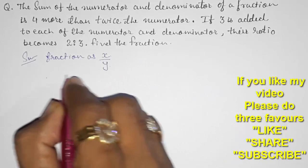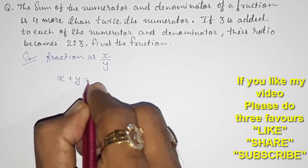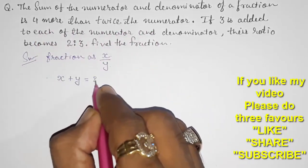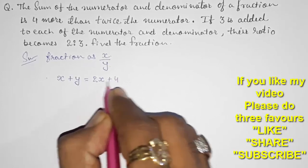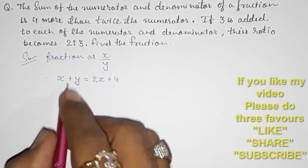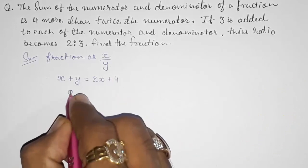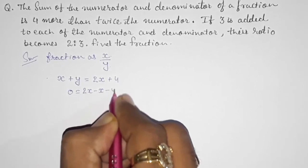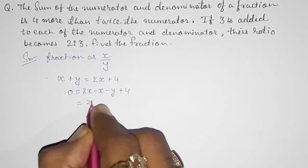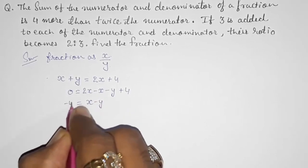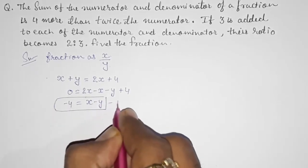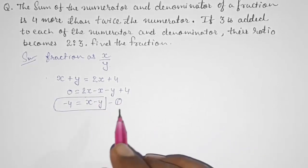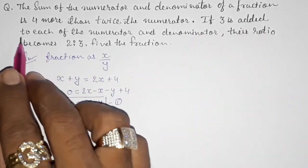Sum of numerator and denominator: x + y = 2x + 4 (4 more than twice the numerator). Rearranging: x + y − 2x = 4, so −x + y = 4, giving us x − y = −4. This is equation one.